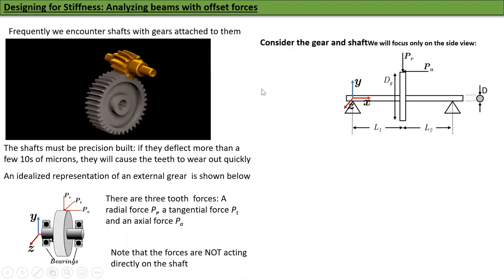Now, consider the gear and shaft. To solve this problem, I need two views: one is a top view and one is a side view. I'm going to show the side view only for now. In the side view, the forces that you will see are the axial force and the radial force. The tangential force will only show up in the top view because it's sideways.